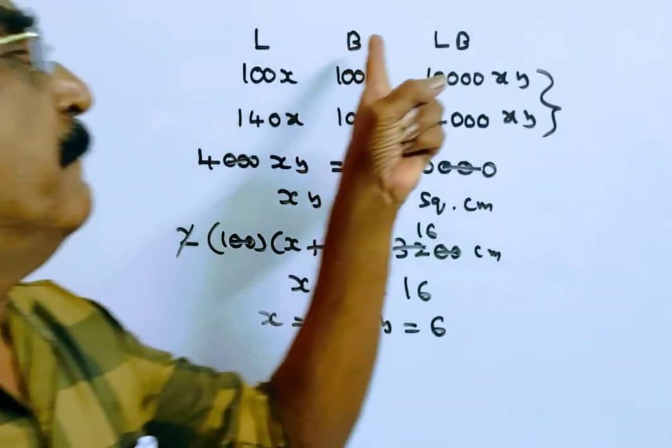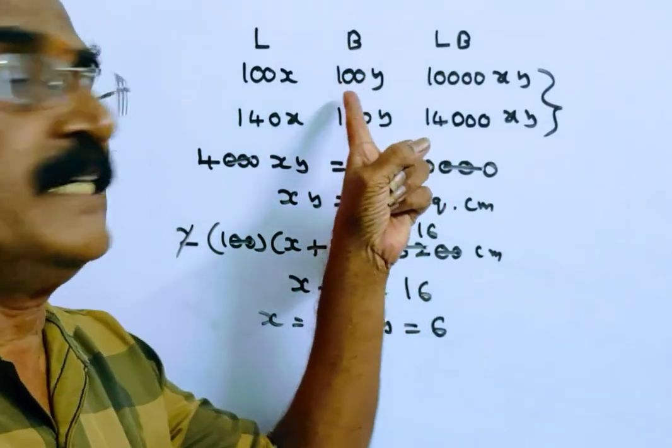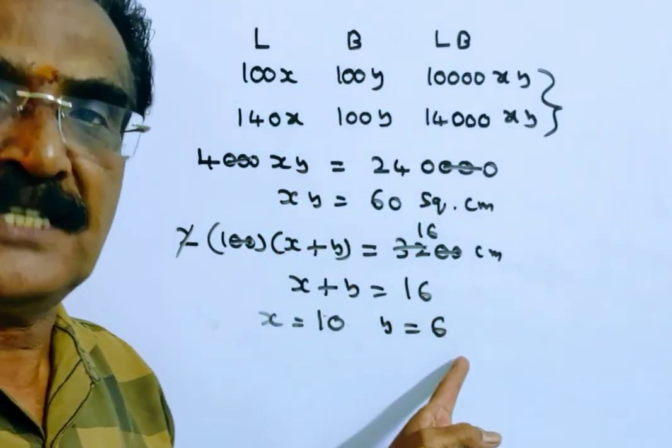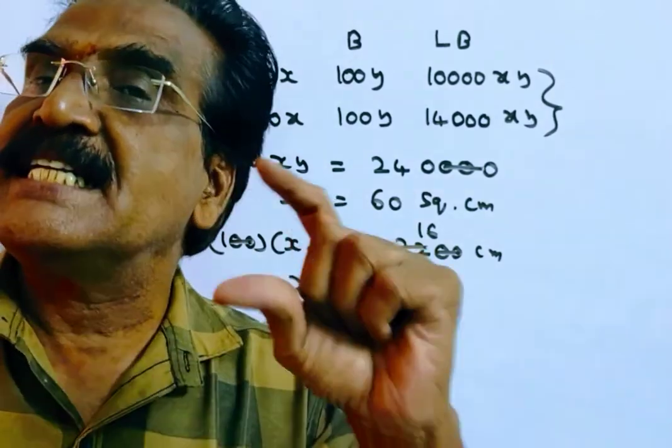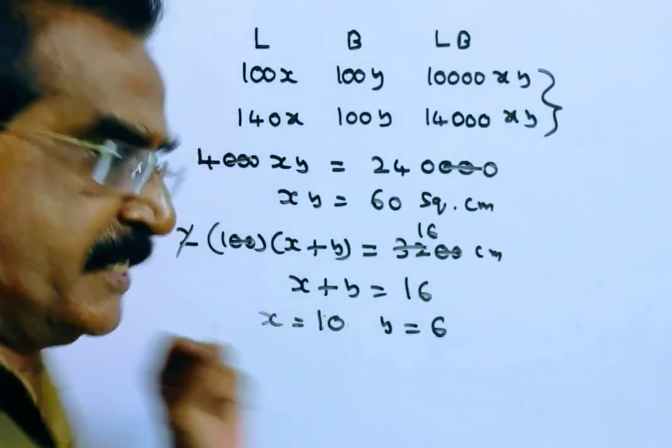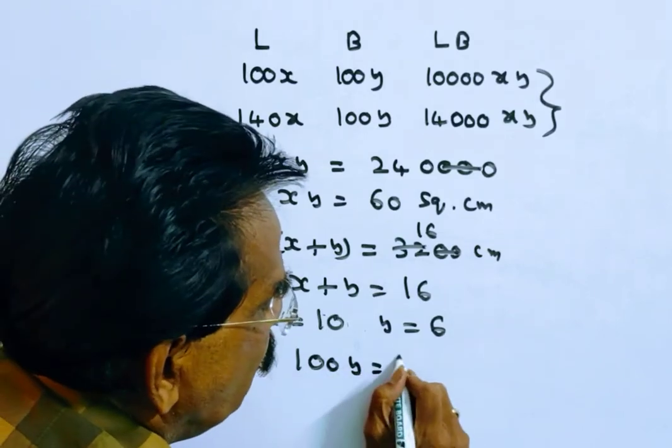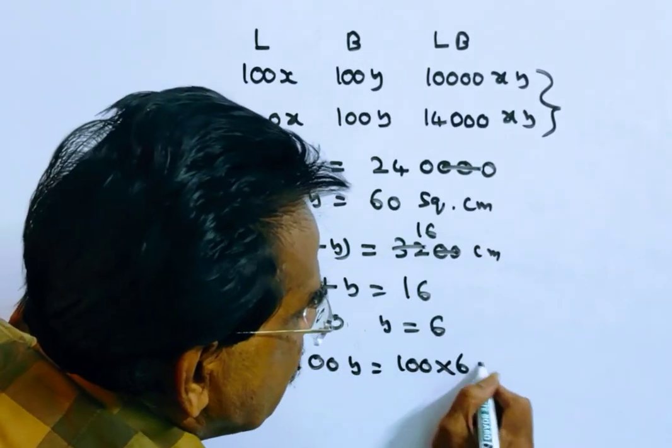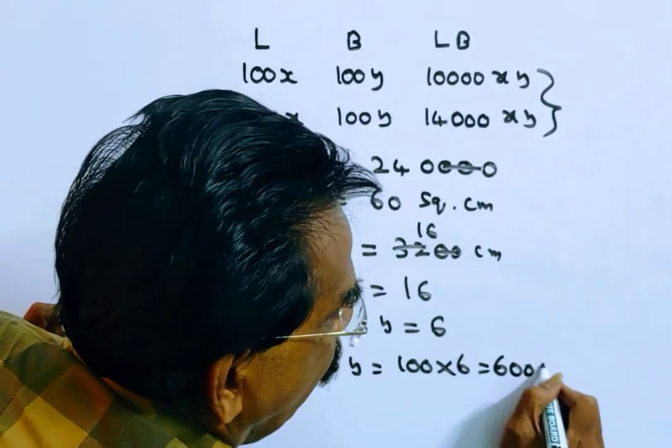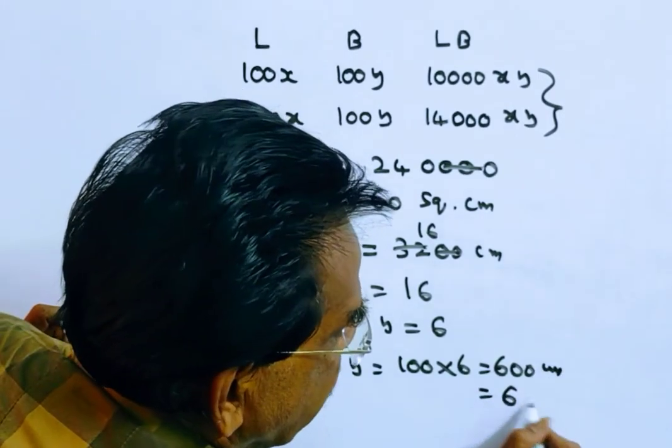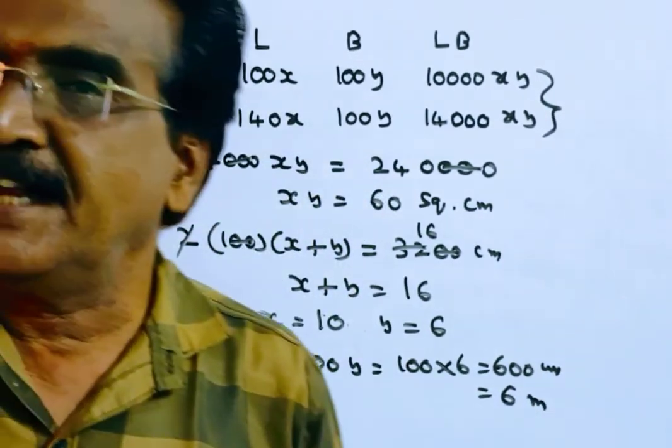The breadth is 100y, 100 into 6, 600 centimeters or 6 meters. Thank you.